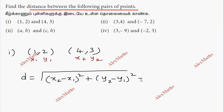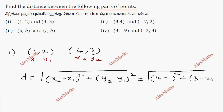Now we will take the substitution. The distance is the square root of (4 minus 1) whole square plus (3 minus 2) whole square. So 4 minus 1 is 3, that gives us 3 squared. And 3 minus 2 is 1, so 1 squared.